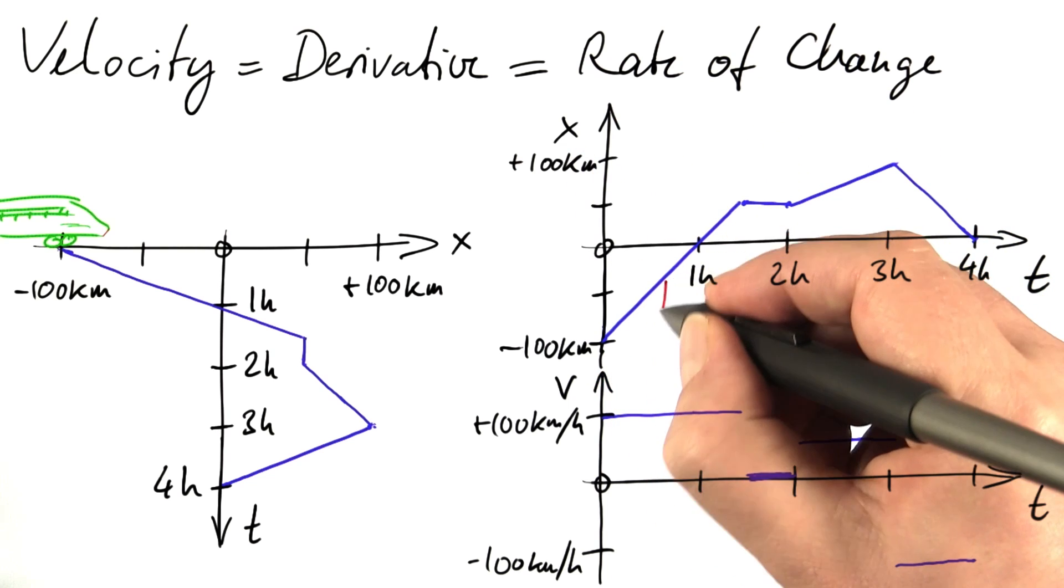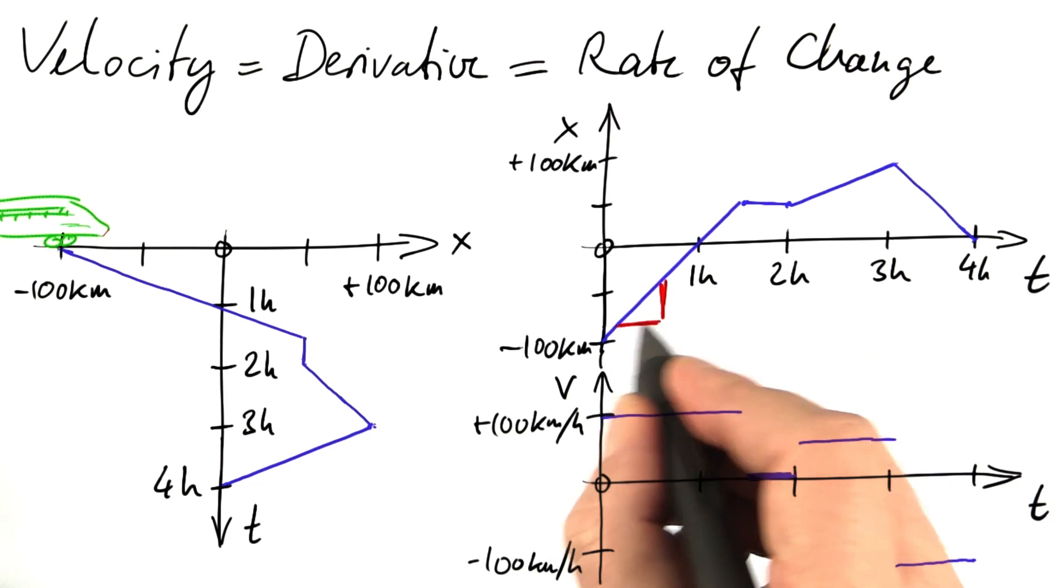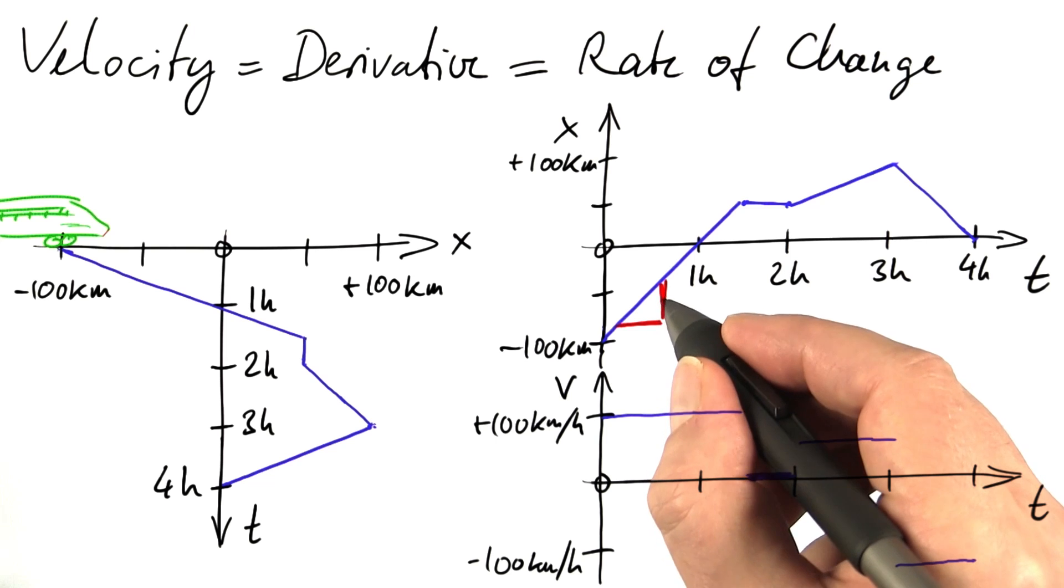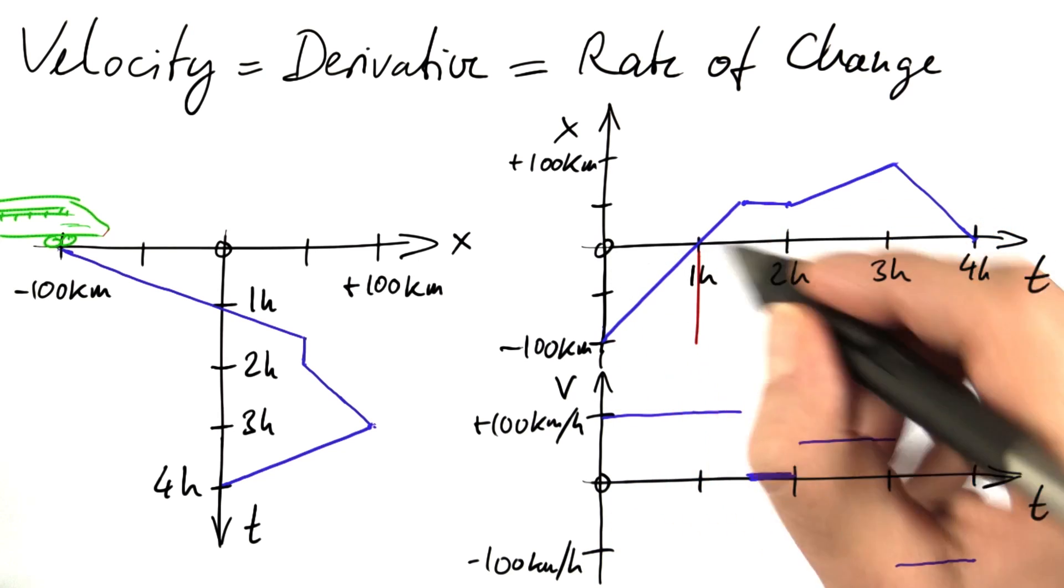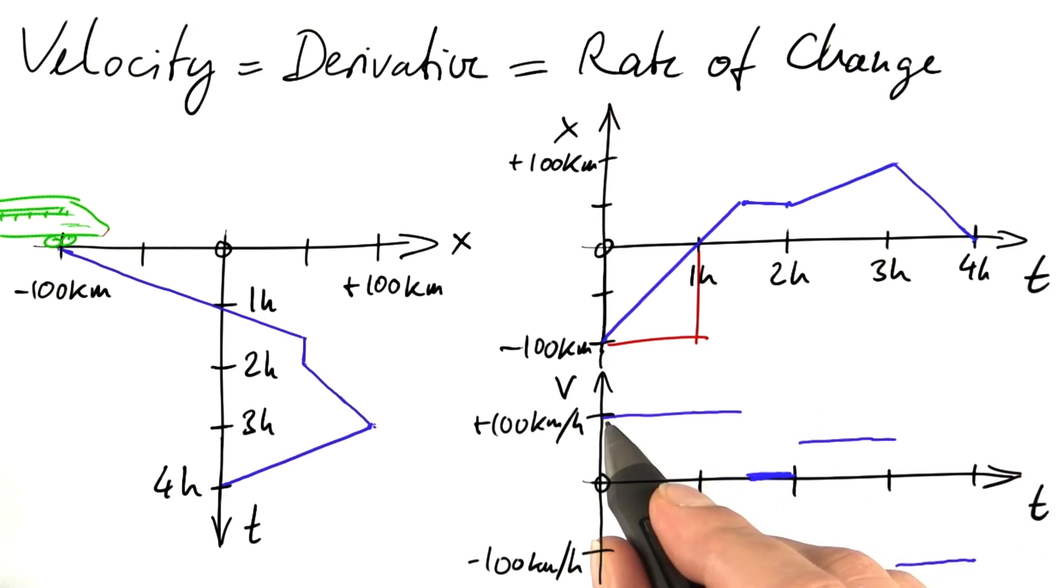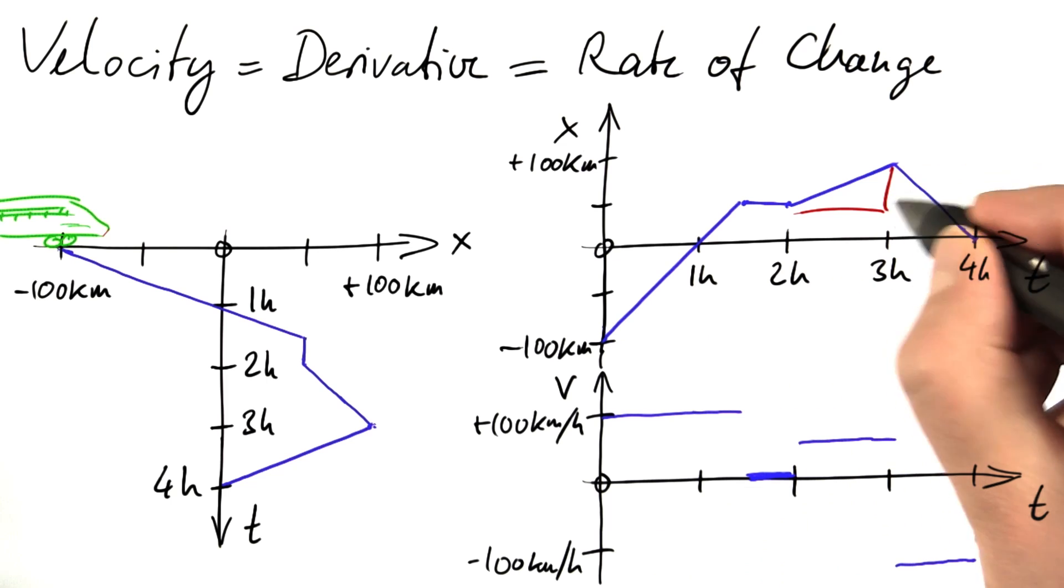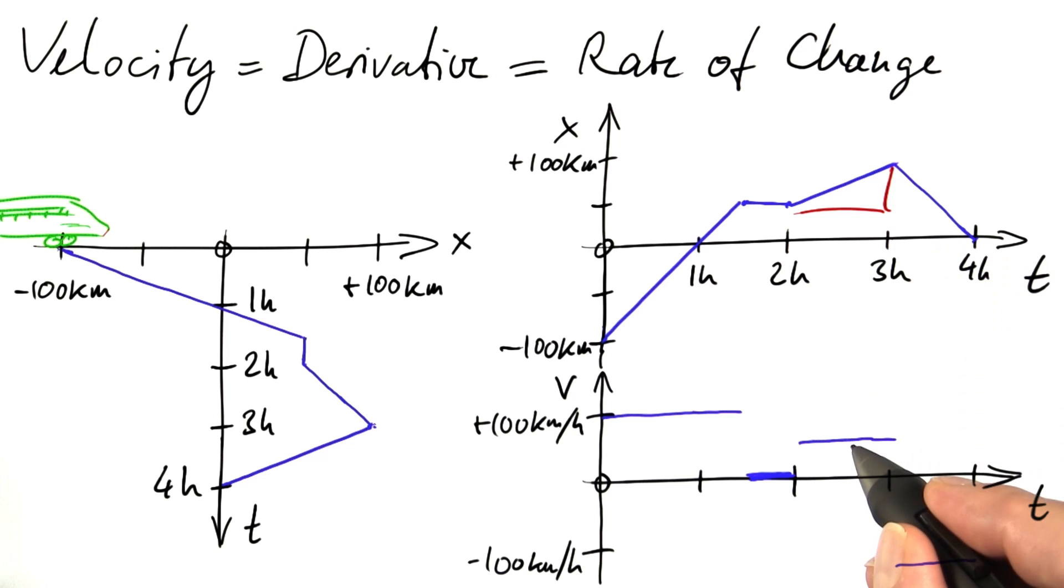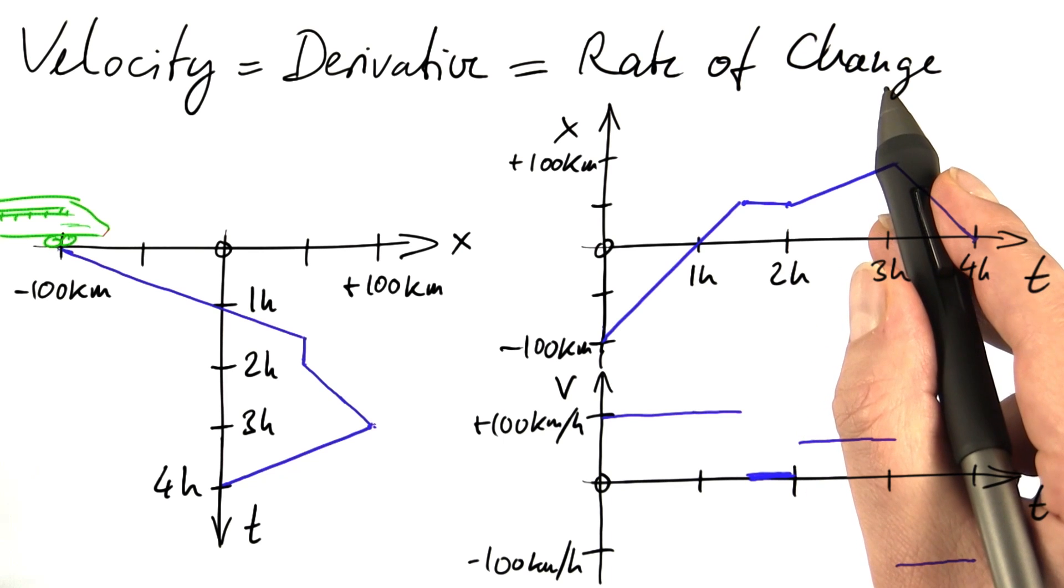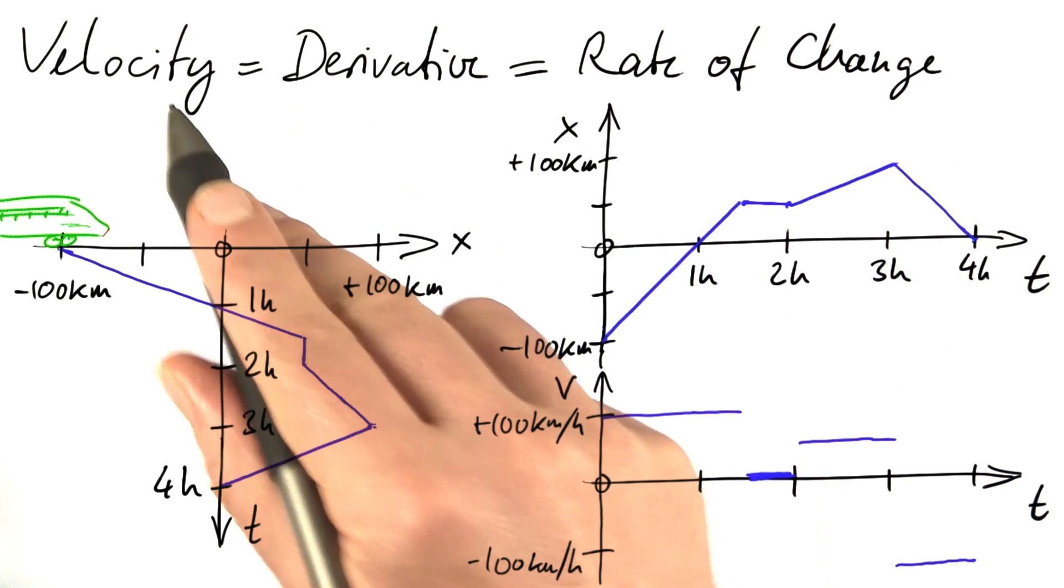The rate of change would be the ratio. For instance, this ratio, 100 kilometers divided by one hour, a velocity of 100 kilometers per hour. Then in this case, the ratio would be 50 kilometers divided by one hour. 50 kilometers per hour. So what we are drawing here is the rate of change of the x position, nothing but the velocity.